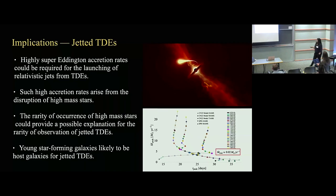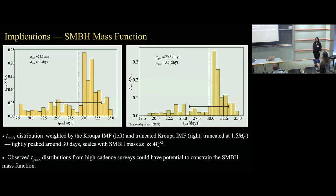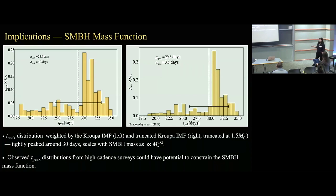You can also use this model to infer things about the supermassive black hole mass function. These two plots both show the distribution of peak timescale. On the left, we took all the stars described above and weighted with the Kroupa IMF. On the right, we weighted with the Kroupa IMF truncated at 1.5 solar masses to approximate a more present-day mass function. Independent of the weighting function used, this shows that the distribution of peak timescales is very tightly peaked around 30 days, and this scales as the square root of black hole mass. This can therefore be used to infer the black hole mass function from TDEs, especially as survey cadence improves and peak timescales can be observed more accurately.